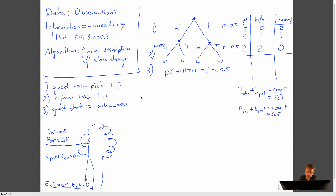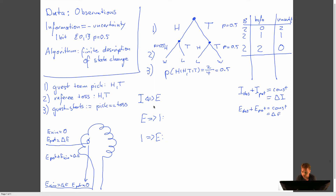Formalizing this connection is a lot harder than on this whiteboard, but ultimately we can think: if we want to say that information is equivalent to energy, we need a two-way street from one to the other. That means energy implies information, and information implies energy. Energy implies information — whenever we have energy, we need to have information — we've already settled that, because we need data to observe energy. In general, anything we know about the universe is information. There's nothing we can know about the universe without going through information.